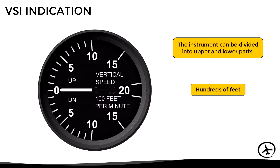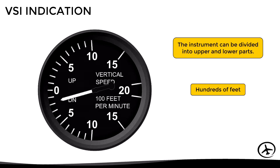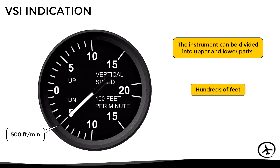In this example, the needle is pointing zero, indicating that the aircraft is in level flight at a constant altitude. If the needle moves up like this, it would be indicating a rate of climb of 300 feet per minute.